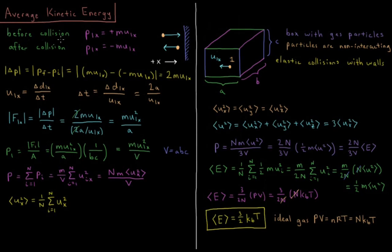Let's look at its velocity and momentum before and after a collision. Its momentum before the collision is plus its mass times its velocity in the X direction, M times U₁ₓ. It's going up, hits the wall, bounces off, and then its momentum after the collision is minus MU₁ₓ — the same magnitude of velocity but with an opposite sign.